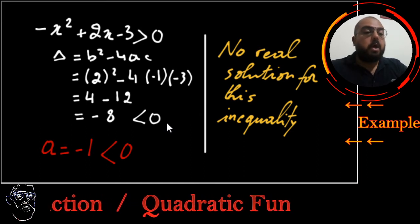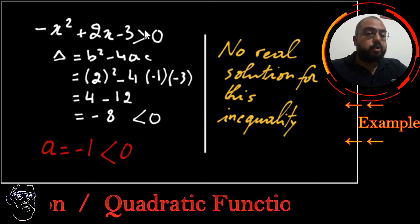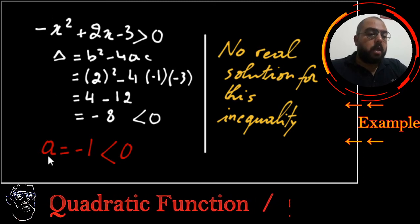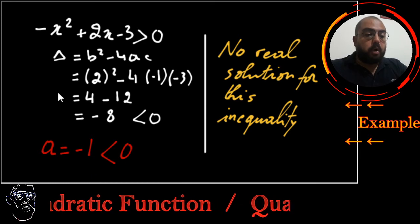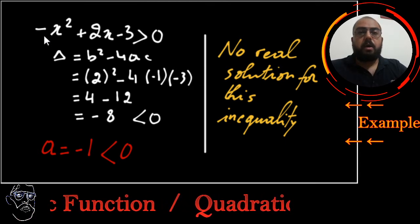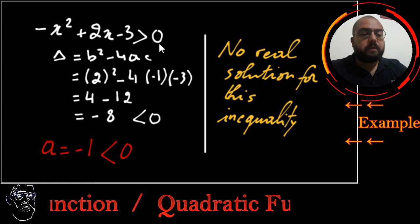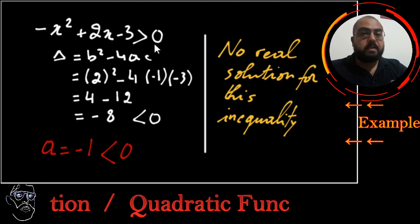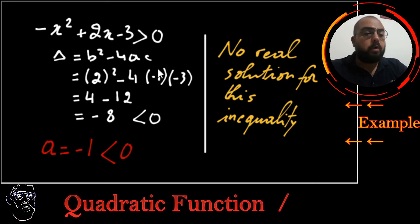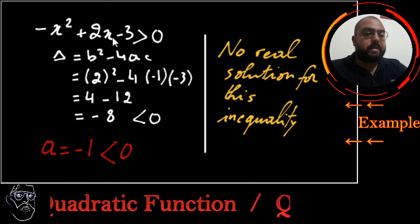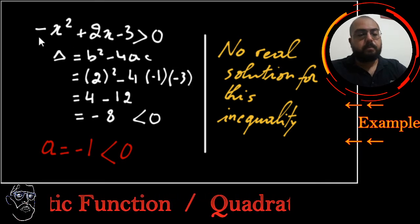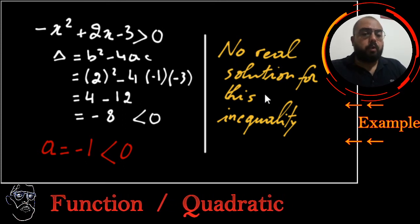Delta is negative, no real roots. I can't factorize this polynomial, so this polynomial will take the same sign as a. a in this case is negative, so this polynomial will always be negative just like the sign of a. I'm looking for positive values. Since this polynomial is always negative, there are no real solutions for this inequality. There are no values for which I will replace x and obtain a positive value.